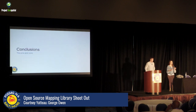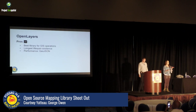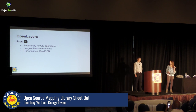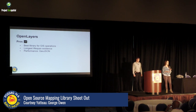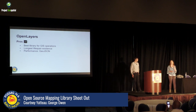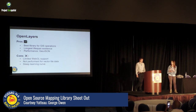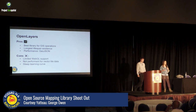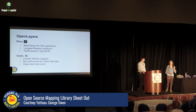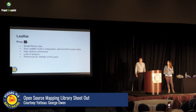Some conclusions — it really does depend on your use case. For OpenLayers: pros include being the best library for GIS operations, the longest lifespan, a very active community, and good GeoJSON performance. Cons include limited WebGL support, the worst performance for vector tile data, and a steep learning curve if you're starting out. For Leaflet: pros are small library size, built-in Esri Leaflet integration with ArcGIS hosted data, very active community, and rich plugins. It's middle of the pack for performance. The main con is no WebGL support.